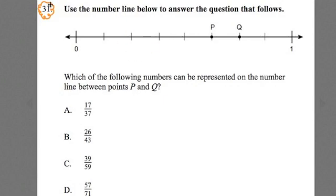Let's look at number 31. I'll read it over and we'll work through it. It says, use the number line below to answer the question that follows. They give a number line. You'll notice that P and Q are points on that number line between 0 and 1. So they're less than 1. They're decimals.